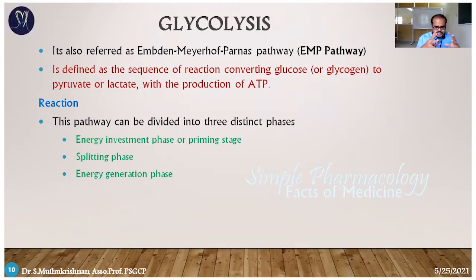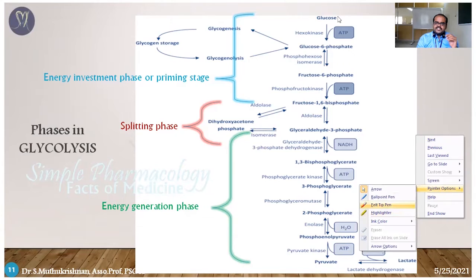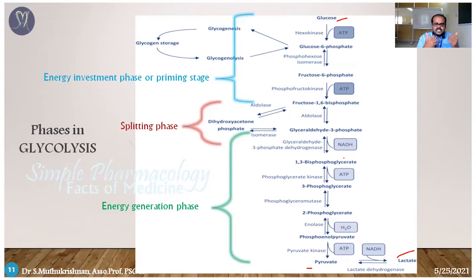Now the first important cycle — glycolysis, otherwise called the EMP pathway. It is the oxidation of glucose process. This reaction is divided into three phases: the energy investment phase, the splitting phase, and the energy generation phase. It is a 10-step reaction — the first step is glucose and the final step is pyruvate or lactate. In the energy investment phase, ATP donates phosphate groups (phosphorylation), which is converted down to ADP. In the splitting phase, the molecule is split into two substances. In the last phase, energy is generated.